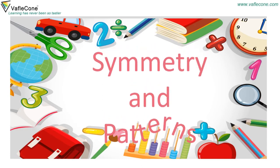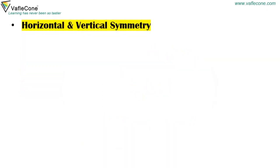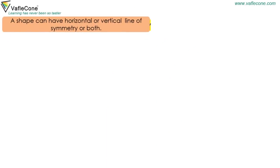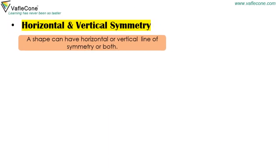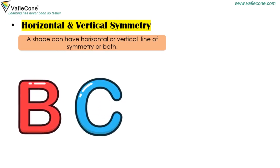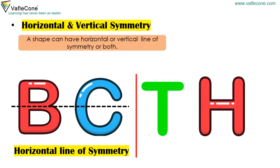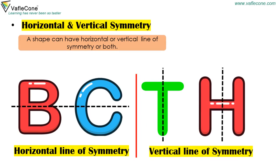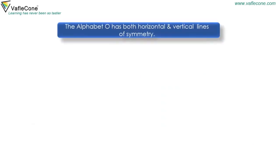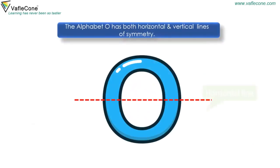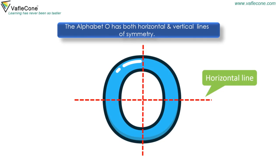Symmetry and patterns. Horizontal and vertical symmetry. A shape can have a horizontal or vertical line of symmetry, or both. BC is an example of a horizontal line of symmetry. TH is an example of a vertical line of symmetry. The alphabet O has both horizontal and vertical lines of symmetry.